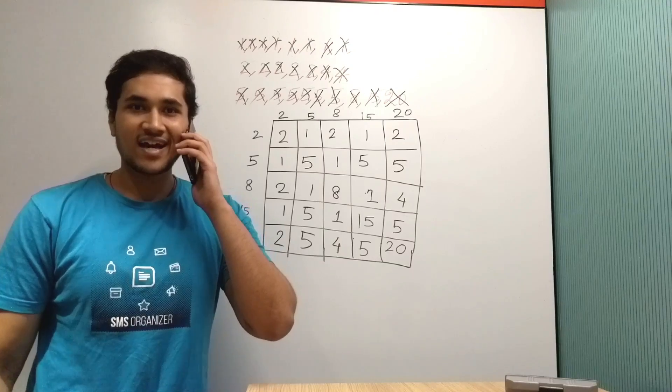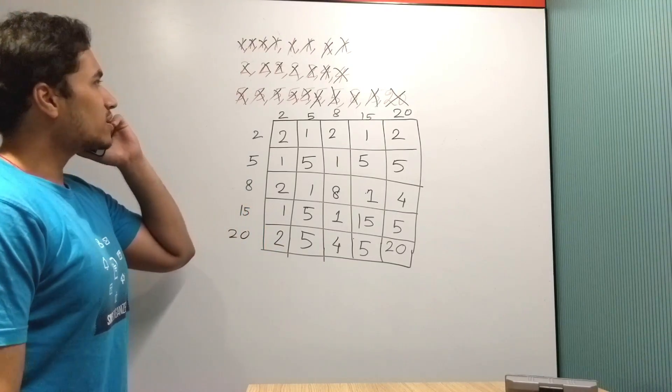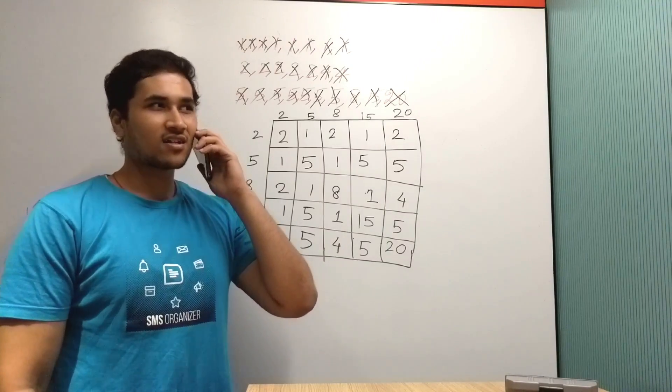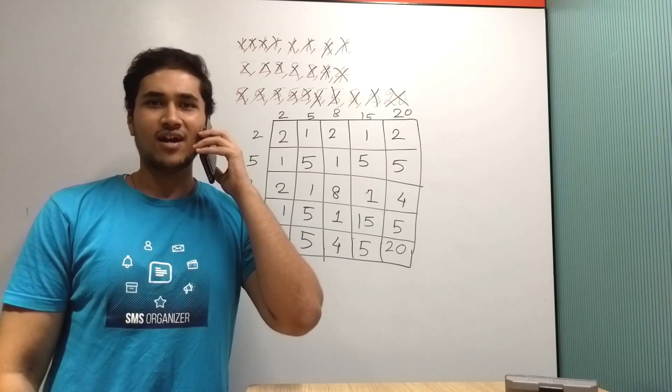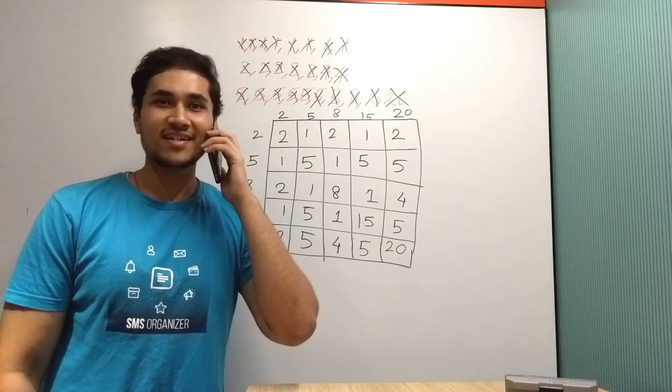Hey Gaurav, I think I have cracked those 5 numbers. Were those 2, 5, 8, 16, and 20? I am wrong? Yeah, because it's not 16, it's 15.